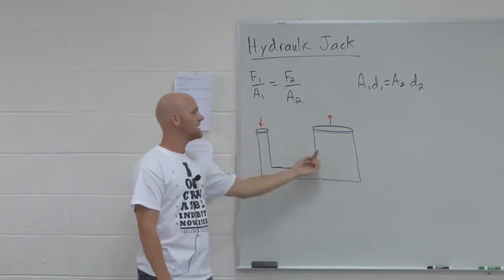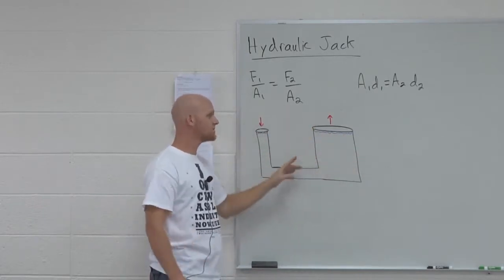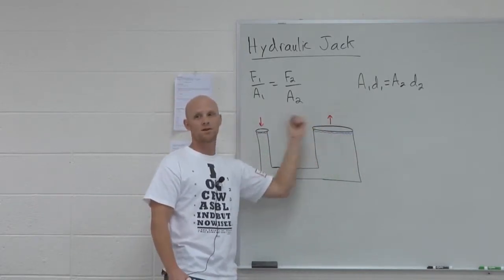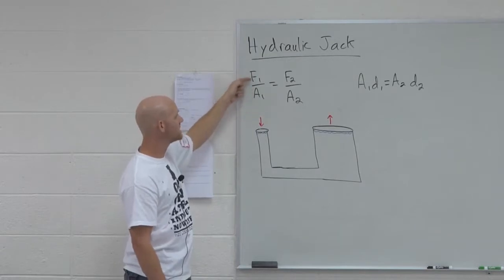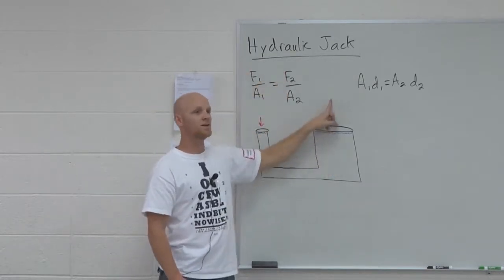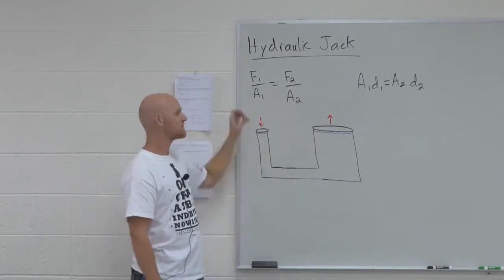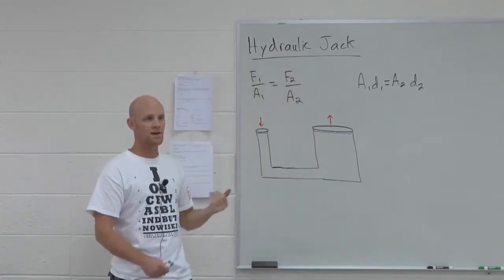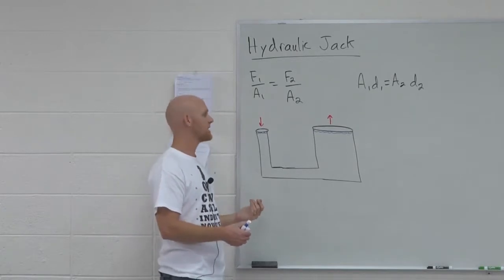If I increase the pressure here, it increases the same amount everywhere in this fluid, including right here. And so the pressure applied here will equal the pressure resulting over here. That's the key. So F over A equals F over A, or F over A equals a constant. That's what Pascal discovered.